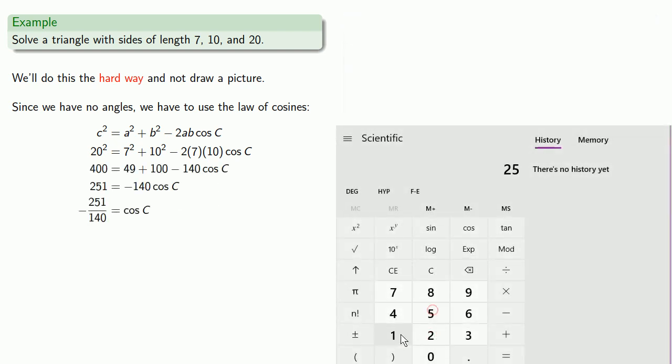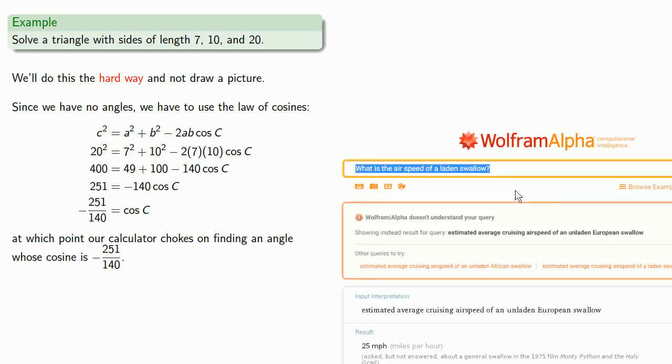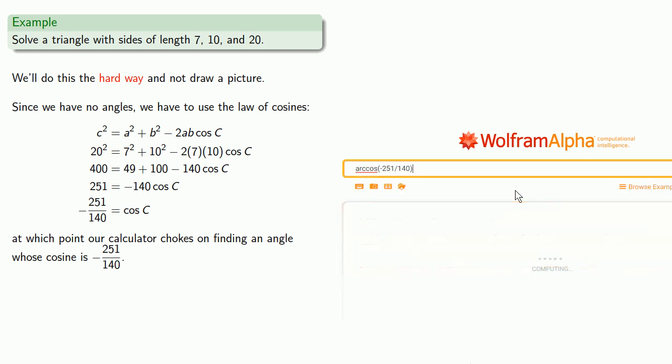And at this point, one of two things will happen. If you have a cheap calculator, it will choke on trying to find an angle whose cosine is minus 251 over 140. On the other hand, if you have a good calculator, it will give you an angle that's absolutely meaningless.